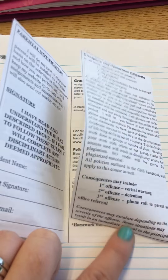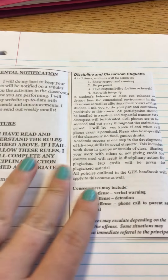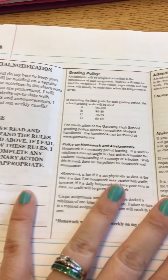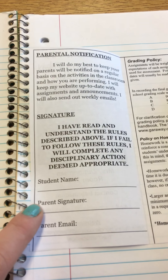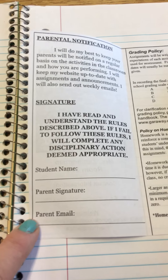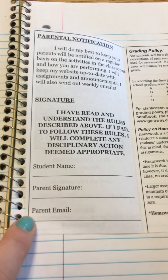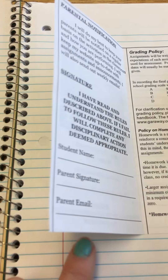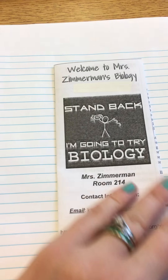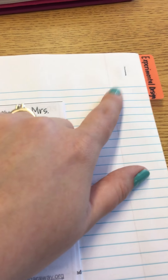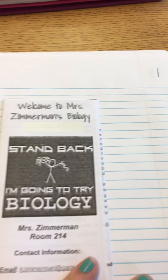You want to have all of those glued in, and then the very next page is going to be the syllabus. You're going to glue that in there. You need to make sure that you have your name on there, your parent's signature, and your parent email. Make sure you let your parents know that I will be sending out weekly emails of things that are going on in class, and that should be page number one.